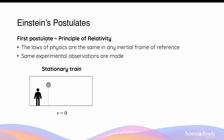The first postulate of special relativity is known as the principle of relativity. It states that the laws of physics are the same in any type of inertial frame of reference. An example of an inertial frame of reference is a stationary train carriage in which there's a person observing the falling motion of a ball. Since the train is not moving, the person will observe the ball falling in a vertical motion due to gravity.